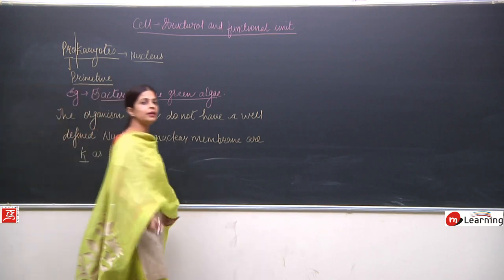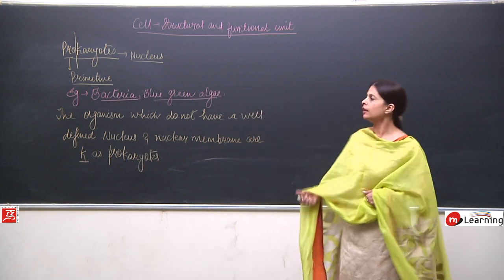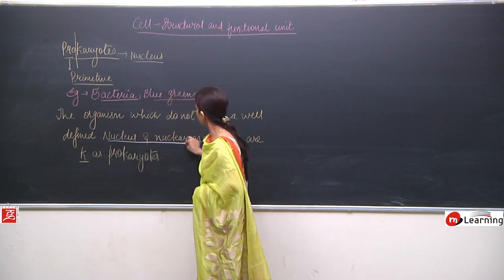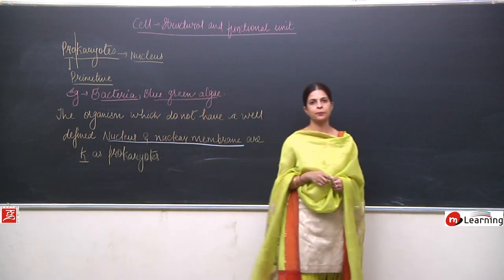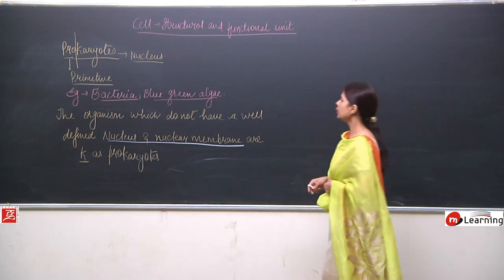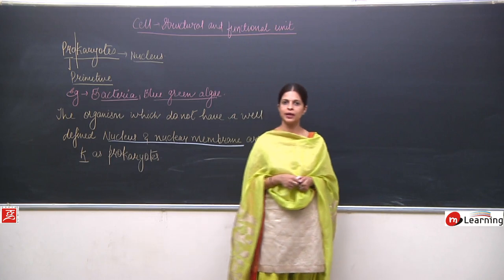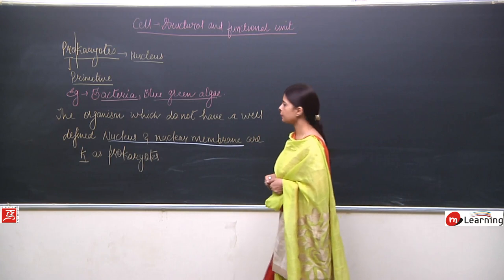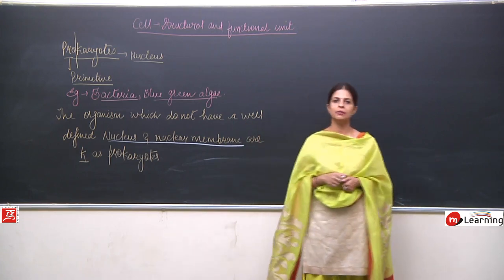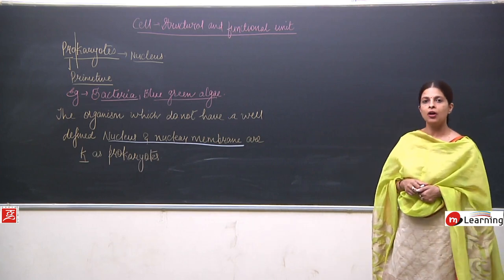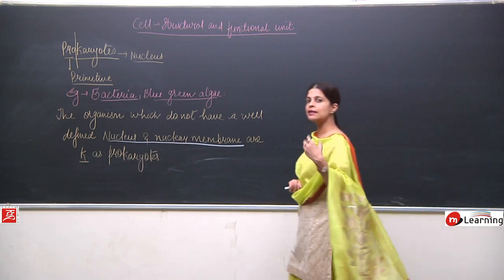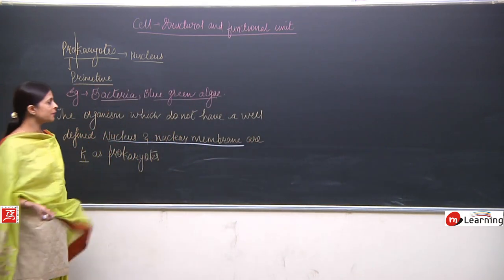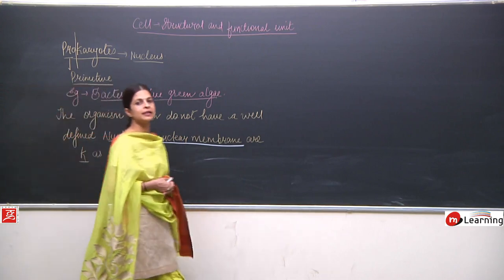The main emphasis here is that the nucleus and nuclear membrane are not well defined in prokaryotes. If we talk about eukaryotes, the organisms in which the nucleus and nuclear membrane are well defined — including structures like nucleolus and nucleoplasm — are known as eukaryotes.